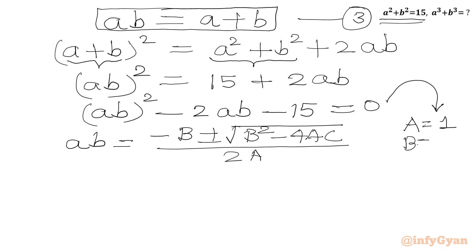If I write capital A which is the coefficient of (ab)²: 1. Capital B which is the coefficient of ab: minus 2. Capital C, the constant: minus 15.